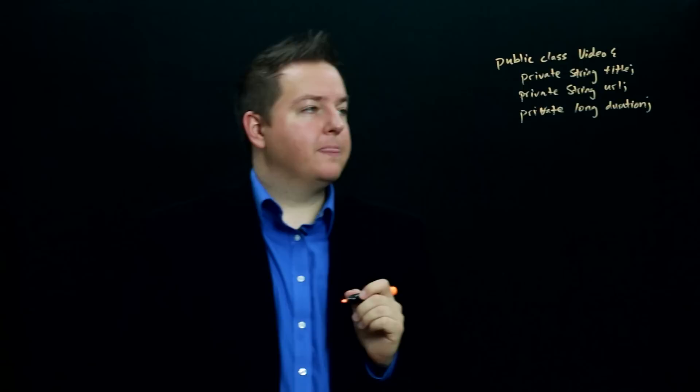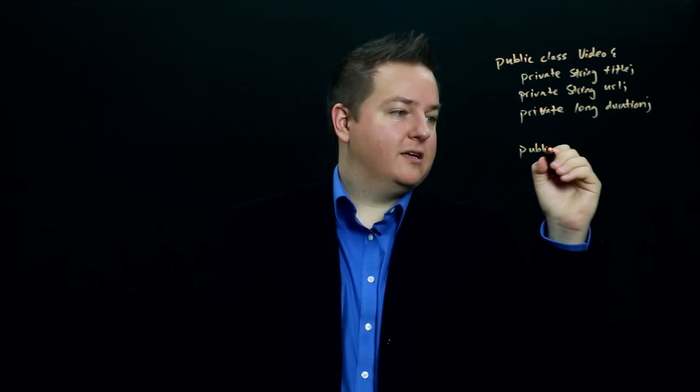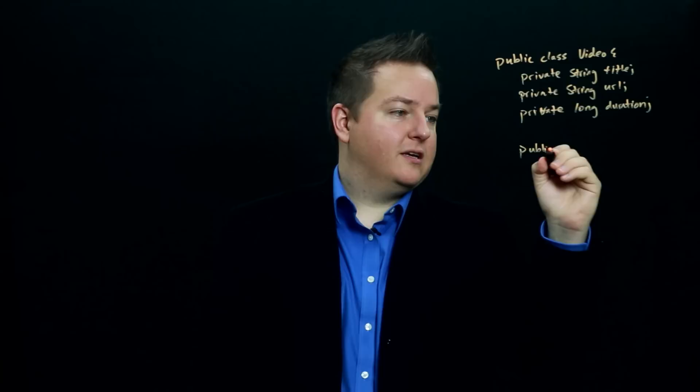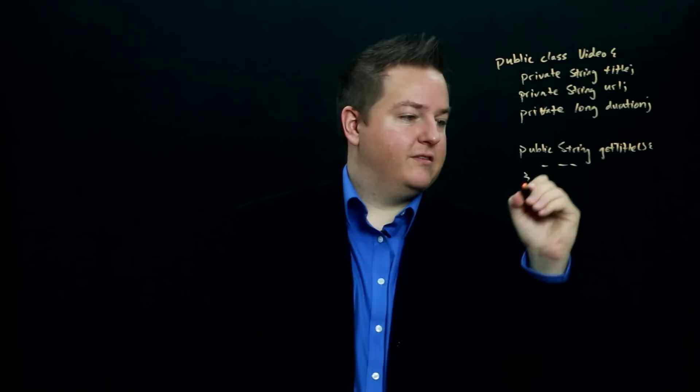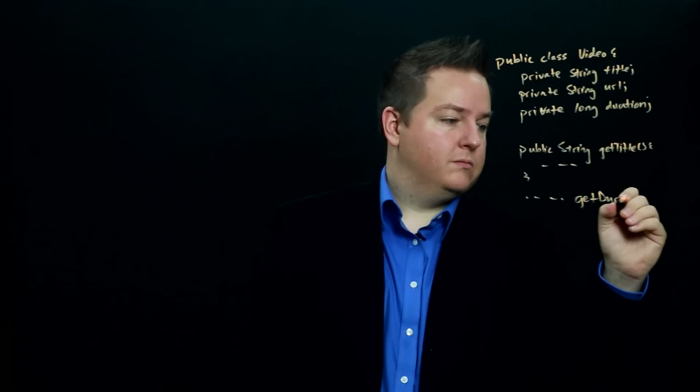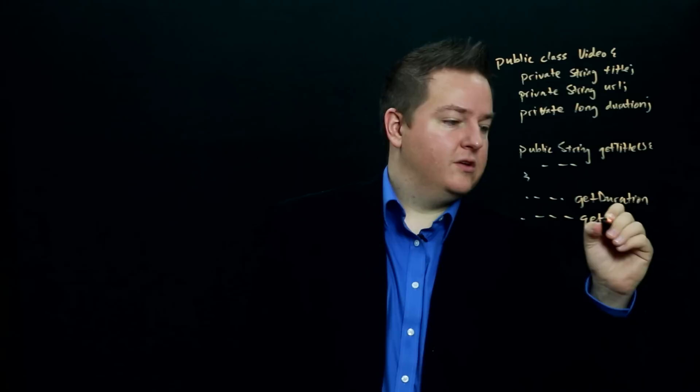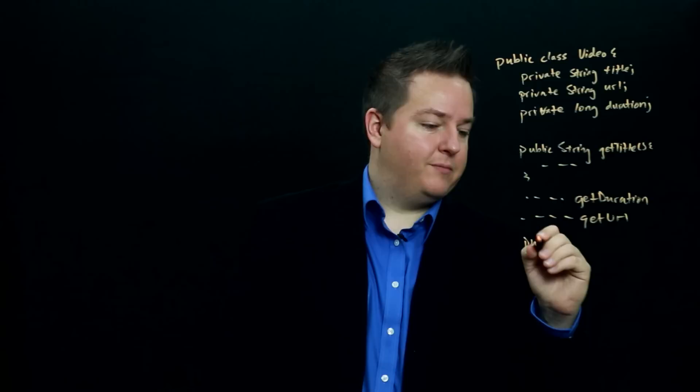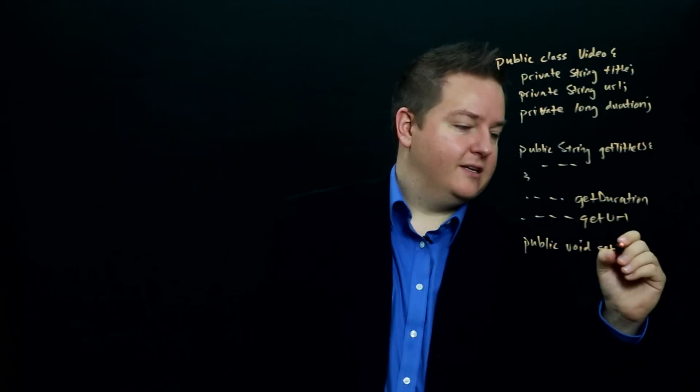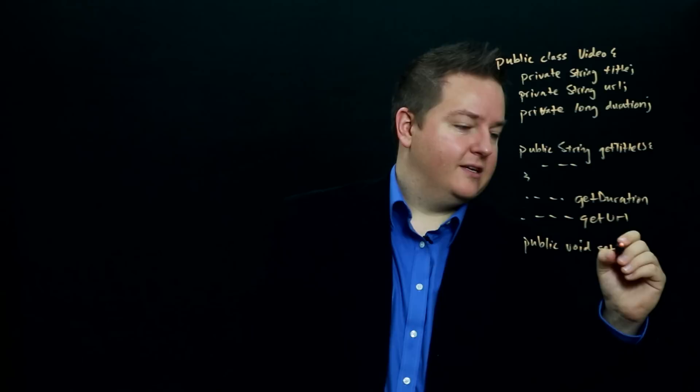Now you can imagine that we would go and create some getters and setters for these properties. So we would have public string get title and similarly we would have get duration, we would have get url and we would also have setters so we would have public void set title. It would take the title in as a parameter.